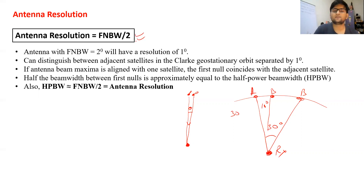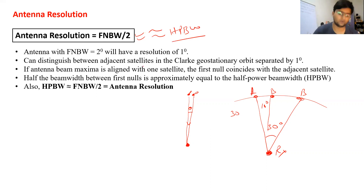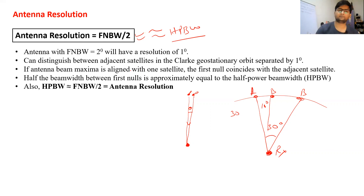In mathematical terms, antenna resolution is defined by the formula: FNBW (first null beam width) divided by two, which is almost equal to the half-power beam width (HPBW). These two terms you already know from previous lectures. So antenna resolution is almost equal to half-power beam width.